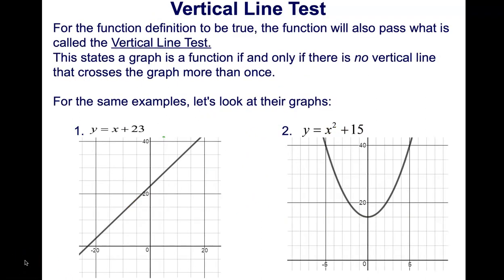There is a second method to determine whether a given graph represents a function — this is called the vertical line test. You draw a vertical line, and if the line crosses the graph at exactly one point, then the graph is a function. Let me show you how to apply this. Drawing a vertical line at a random point, my line crosses the graph at exactly one point, so it is a function.